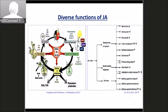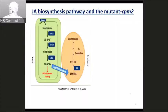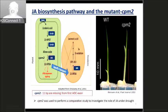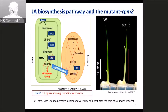This is the simplified version of the jasmonic acid biosynthesis pathway. In this pathway we have a mutant called CPM2, which has a deletion in the first exon of the AOC gene — 11 base pairs are missing, causing a frameshift. The further pathway is blocked, so there is no jasmonic acid production in this mutant.